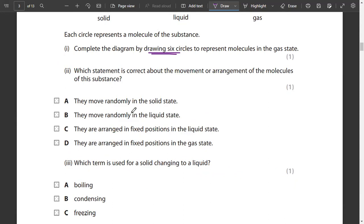Which statement is correct about the movement or arrangement of molecules of the substance? They move randomly in a solid state. They move randomly in the liquid state. They are arranged in fixed positions. They move randomly in the liquid state - here you have the correct option for a substance.